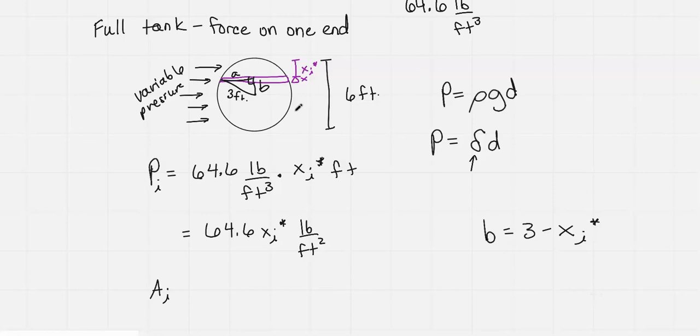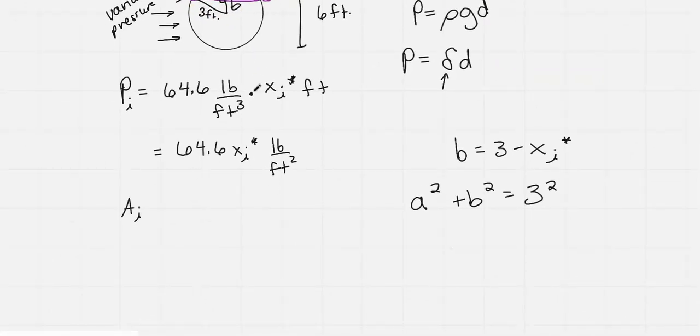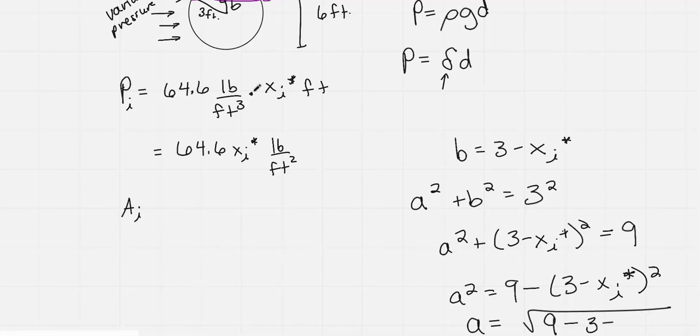We can use Pythagorean theorem to get A written in terms of x. I have A squared plus B squared equals 3 squared, because that's our hypotenuse. B was 3 minus x sub i star. A squared plus (3 minus x sub i star) squared equals 9. A squared equals 9 minus (3 minus x sub i star) squared. So A is the square root of 9 minus (3 minus x sub i star) squared.